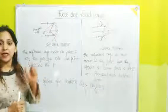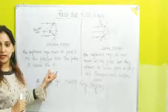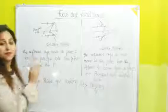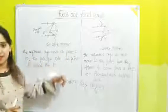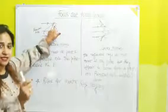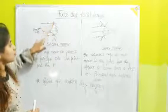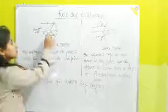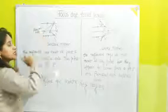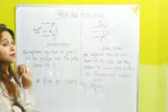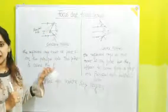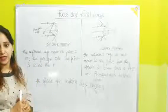Now the topic is focus and focal length. First, let's talk about focus. For a concave mirror, the reflected rays meet at a point F on the principal axis, and this point F is known as the focus. When light rays are incident on the concave mirror, they reflect and meet at the focus point F on the principal axis. This meeting point where the reflected rays meet is known as the focus of a concave mirror.